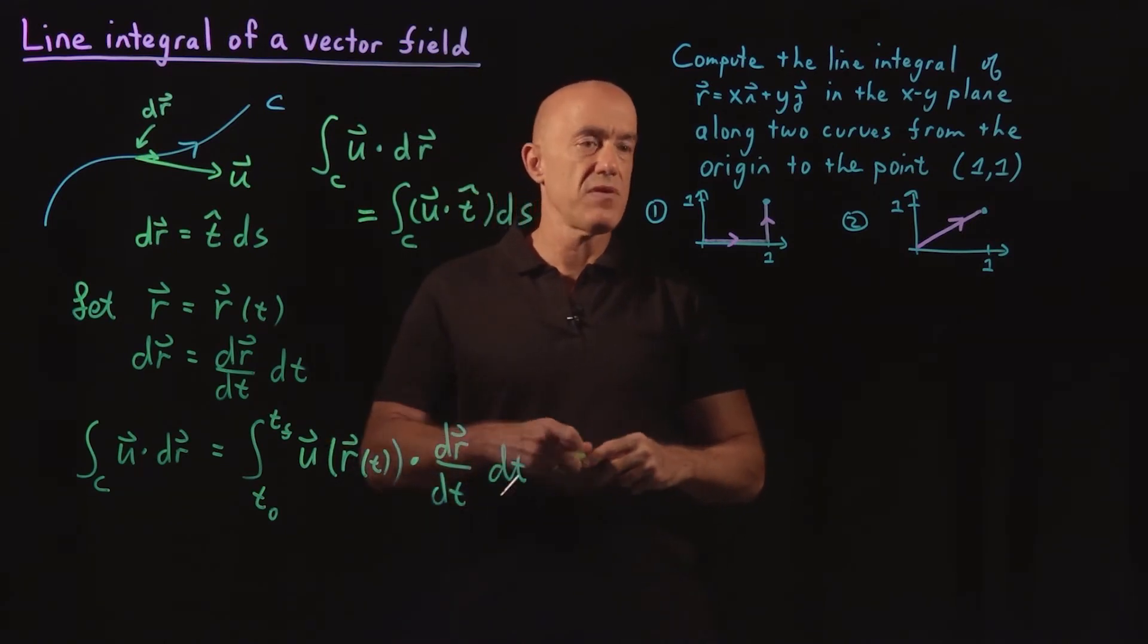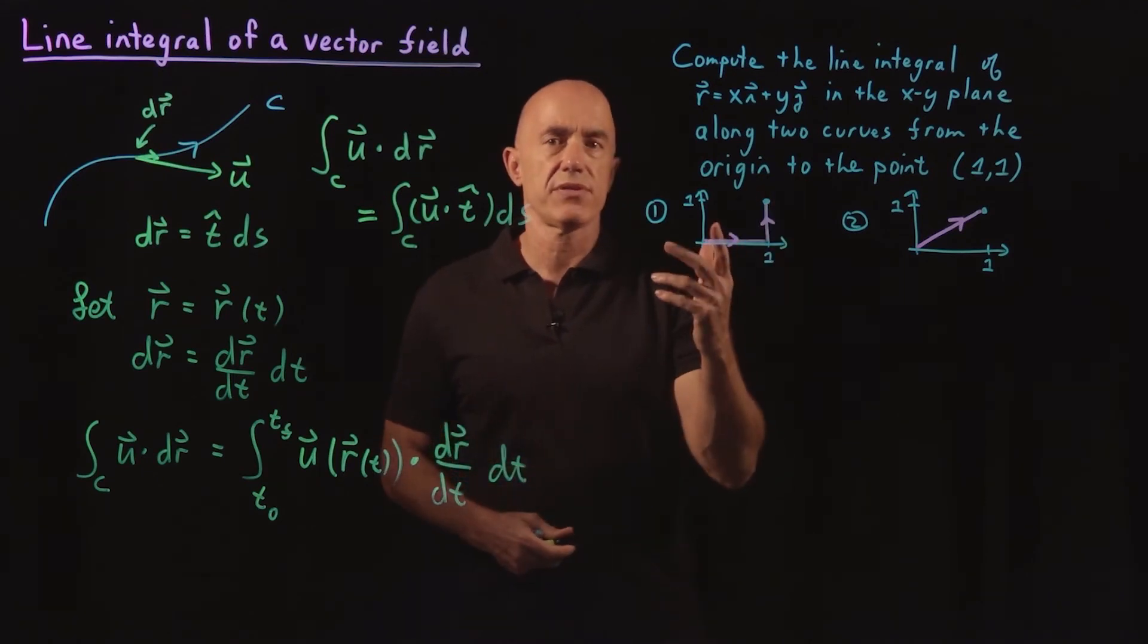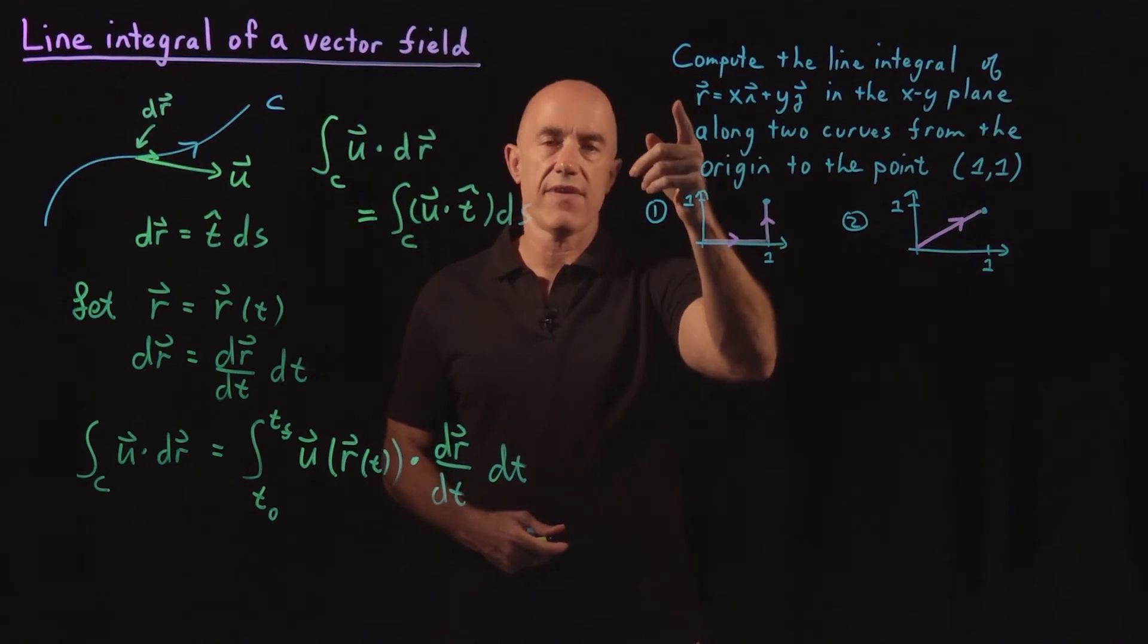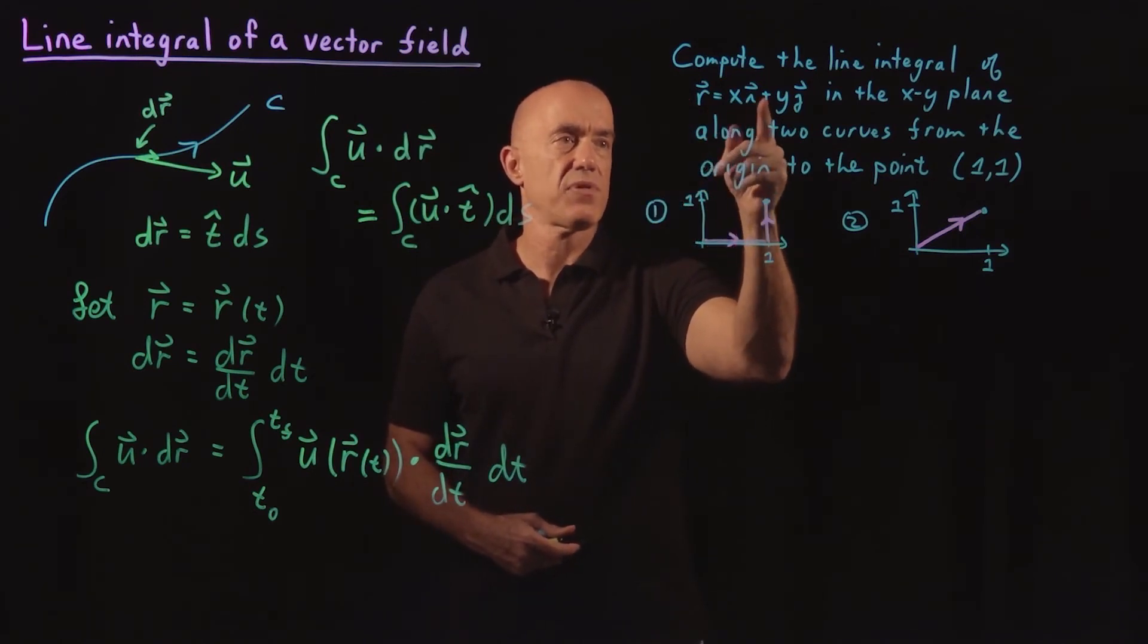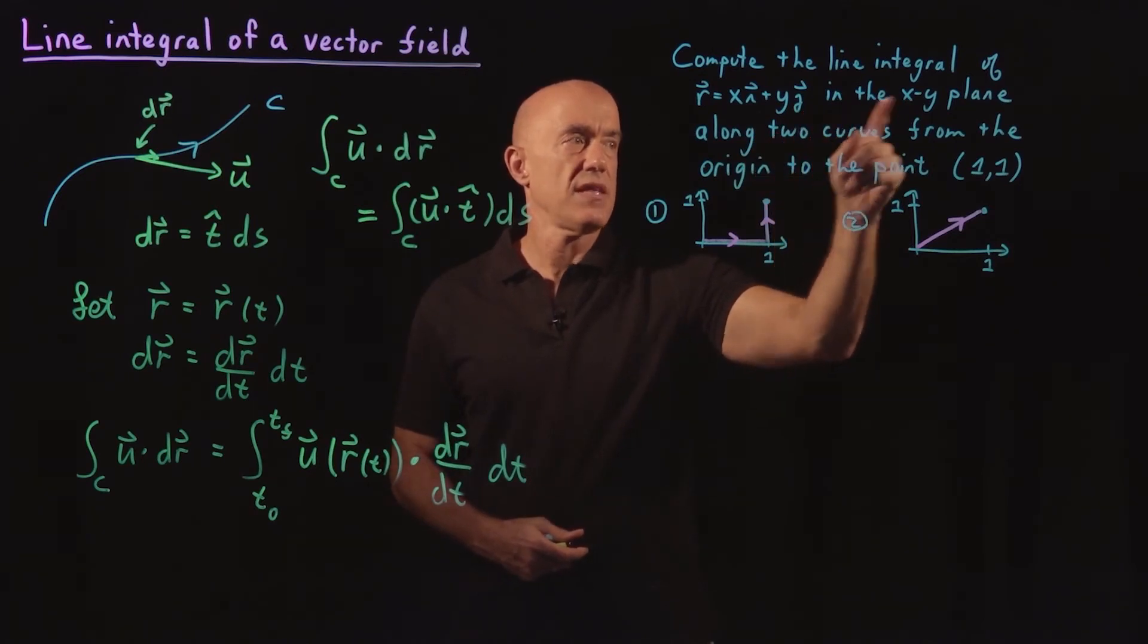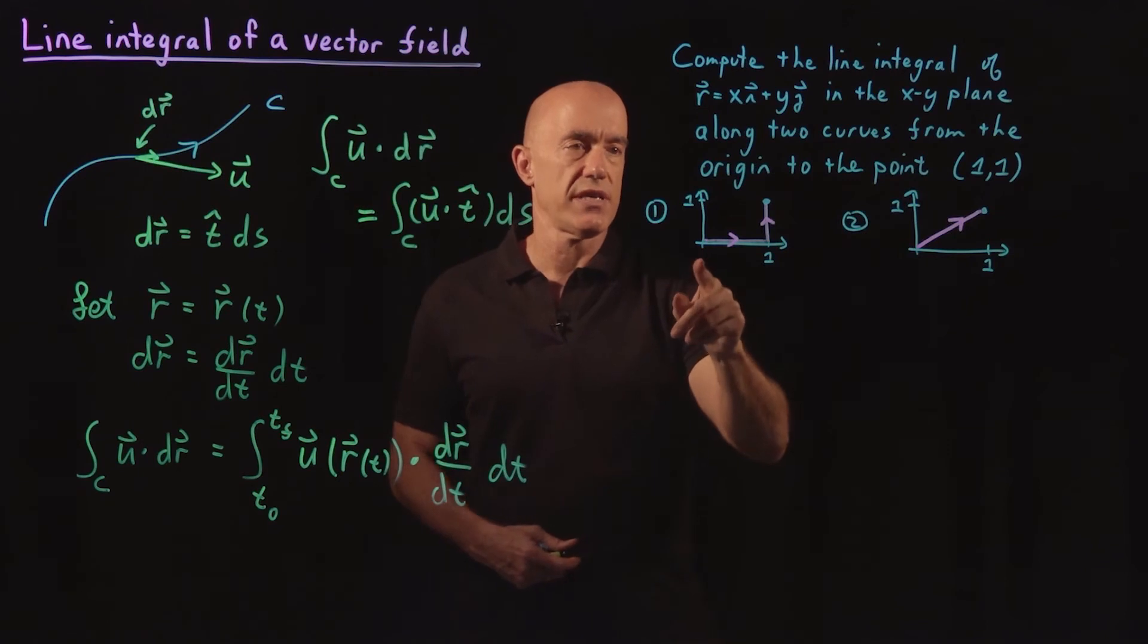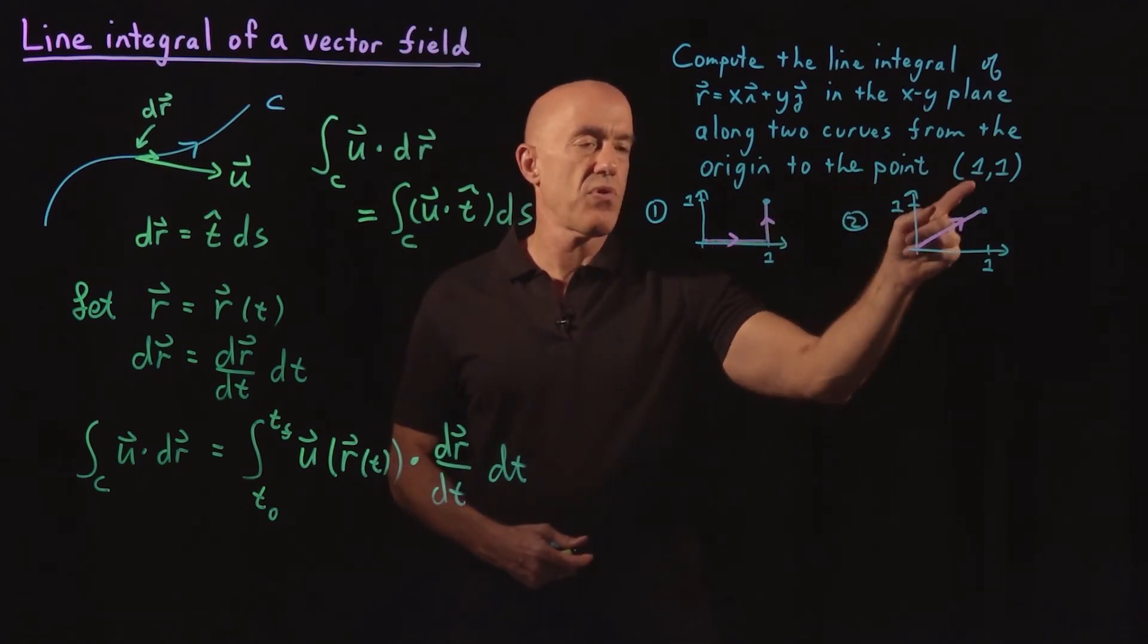Okay, let me work two examples. So I want to compute the line integral of the R vector field, the position vector, which is x i plus y j, in the xy plane, along two curves from the origin (0,0) to the point (1,1).